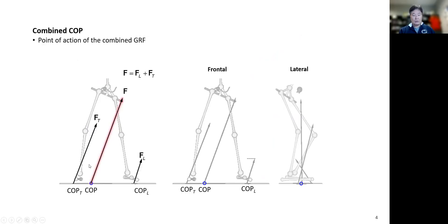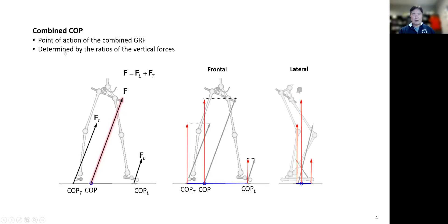We have these two forces acting on the individual feet, and this is the combined ground reaction force. The combined center pressure serves as the point of action of the combined ground reaction force. What determines its position? It is basically determined by the ratios of the vertical forces acting on the feet.